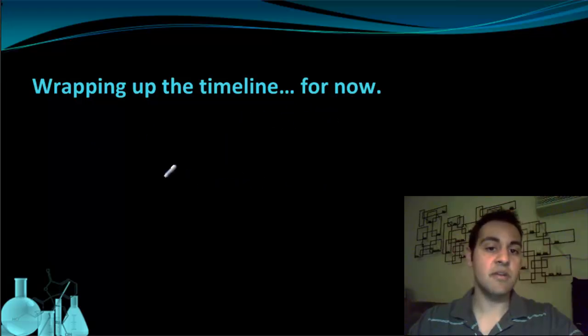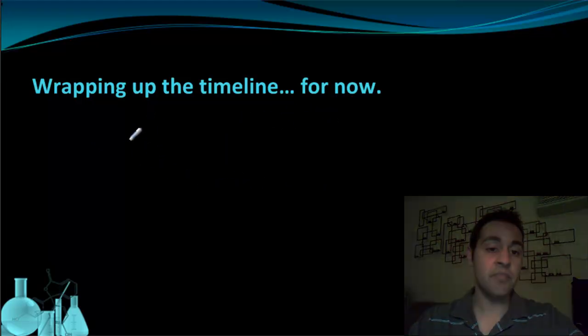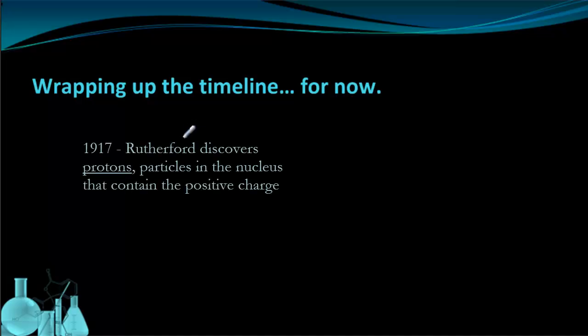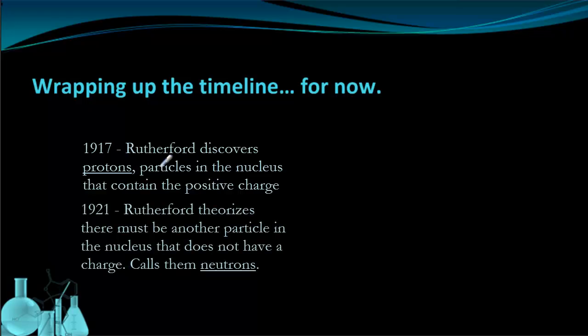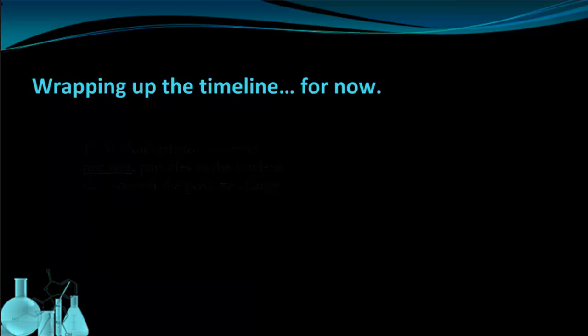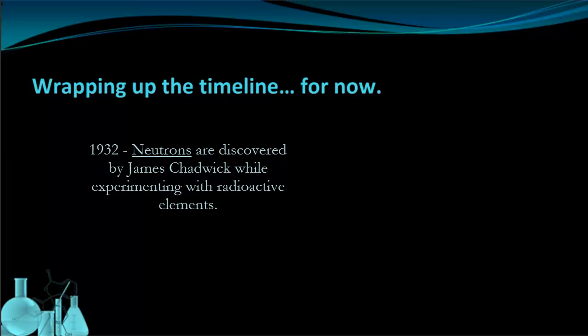In 1917, Rutherford discovers the proton using a nuclear reaction that we're going to talk about later in our nuclear chemistry unit. A few years later, in 1921, he actually theorized that there must be an uncharged mass in the nucleus as well, and he called them neutrons. Neutrons aren't technically discovered until 1932 by a guy named James Chadwick, and Chadwick was also working with radioactivity.